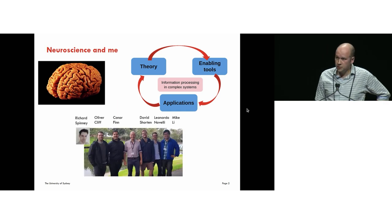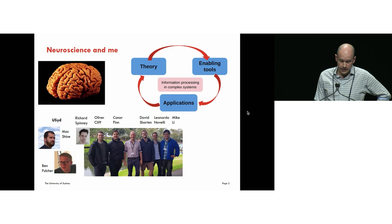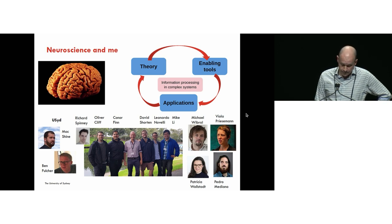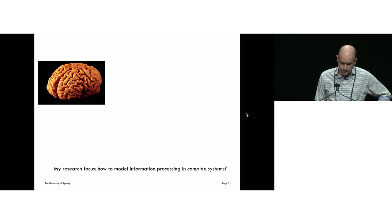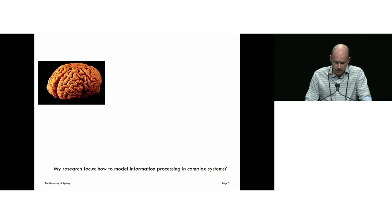That includes my own students and postdocs, whose work will form some of what I'll present, as well as my collaborators internally — particularly Mac Schein and Ben Fulcher — and externally, particularly Michael Vibral from Gerdingen, Viola Prisman, Patricia Wollstadt, and Pedro Mediano from Cambridge. My research area is about information processing in complex systems, so let's start by unpacking that a little.